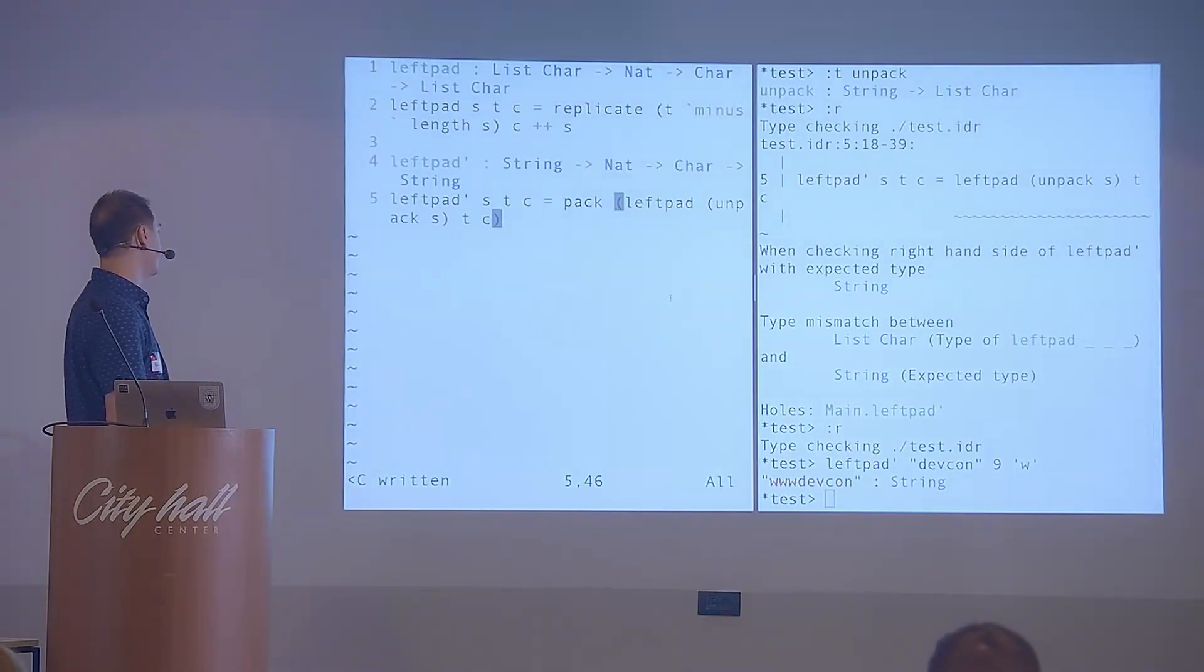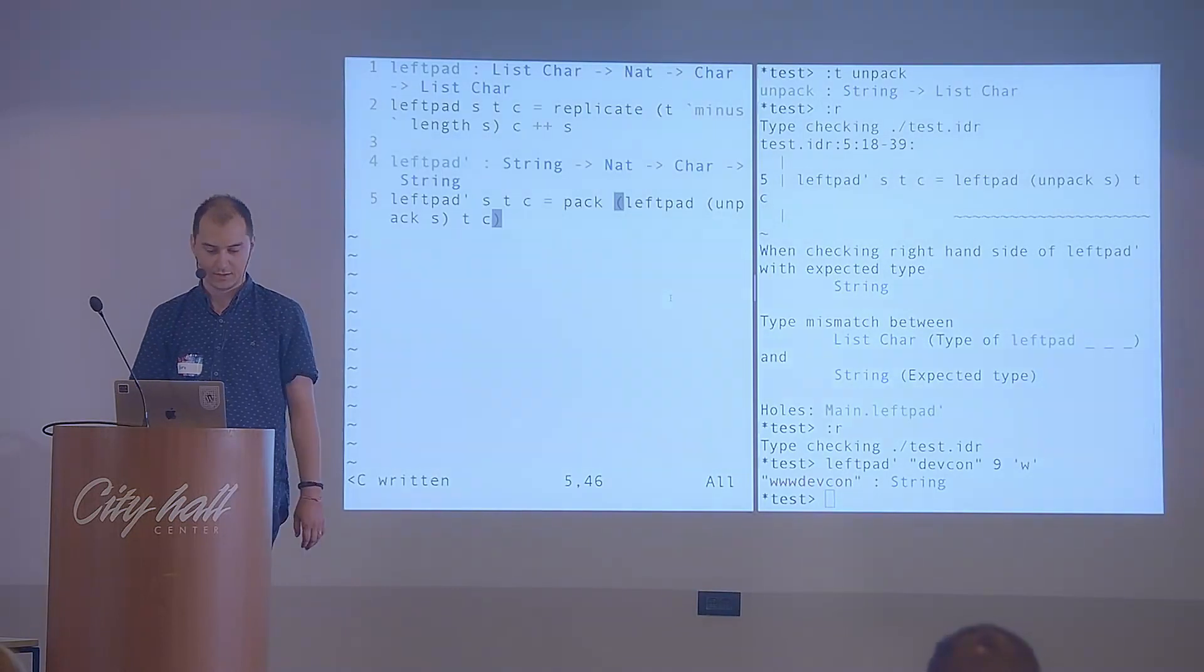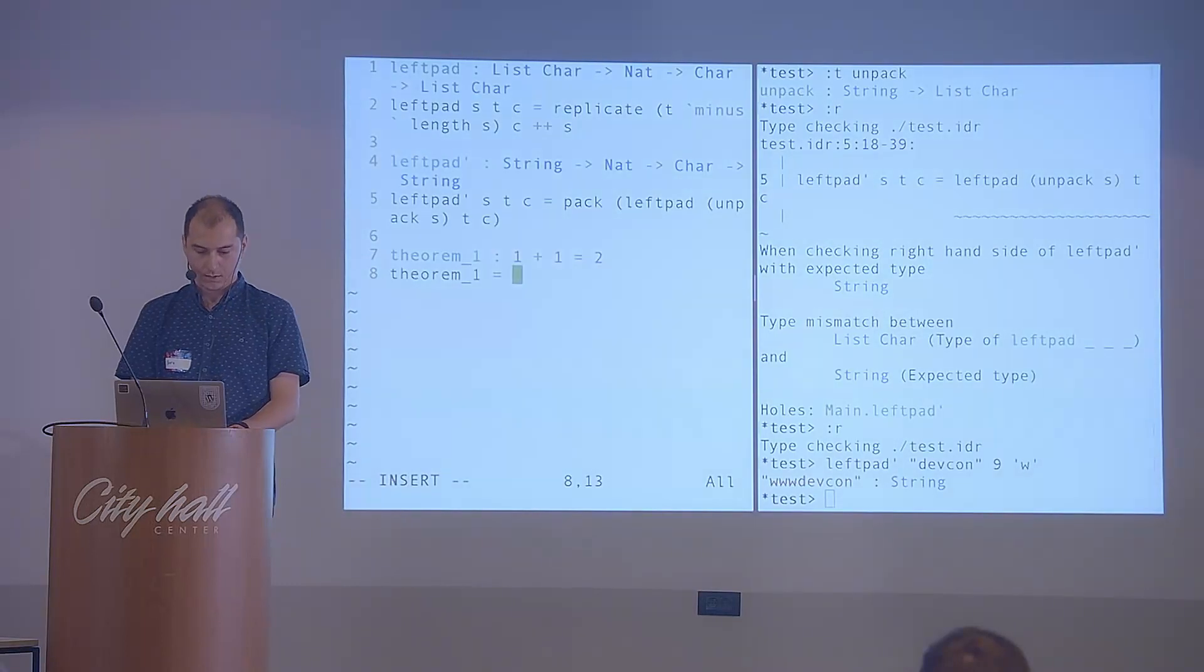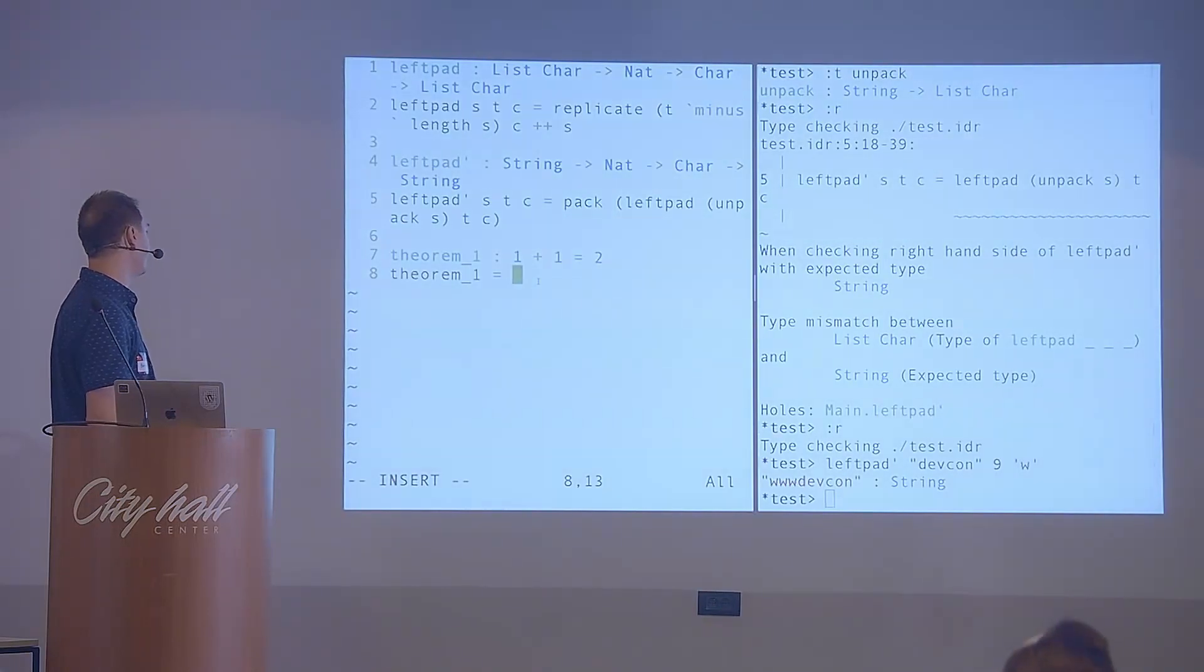So now that we've implemented left pad, next thing that we want to do is prove some property about it. Like, I really mean a mathematical property, not like write a unit test or something. Just try to prove something about it. Before we do that, let's write maybe a simple proof. Let's try to prove that 1 plus 1 equals 2.